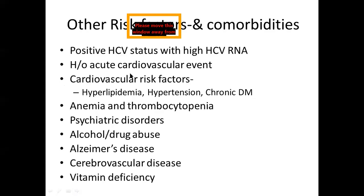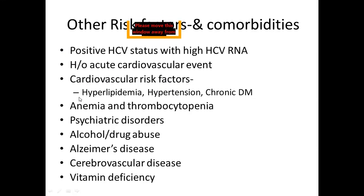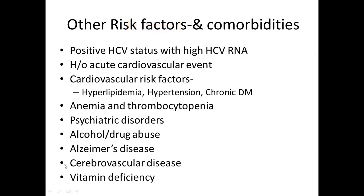Other risk factors and comorbidities include: positive HCV status with high HCV RNA, history of acute cardiovascular events, cardiovascular risk factors like hyperlipidemia, hypertension, and chronic diabetes — which can lead to vascular disease and dementia. Also anemia and thrombocytopenia, psychiatric disorders, alcohol or drug abuse, Alzheimer's disease, cerebrovascular disease, and vitamin deficiency. These can worsen a patient who already has HIV associated neurocognitive disorder.